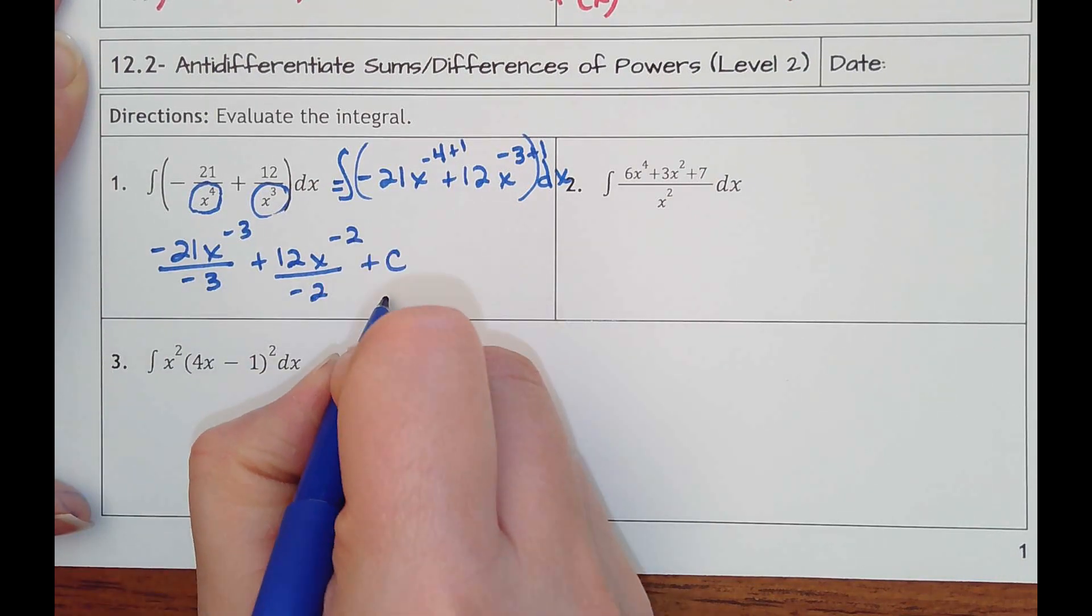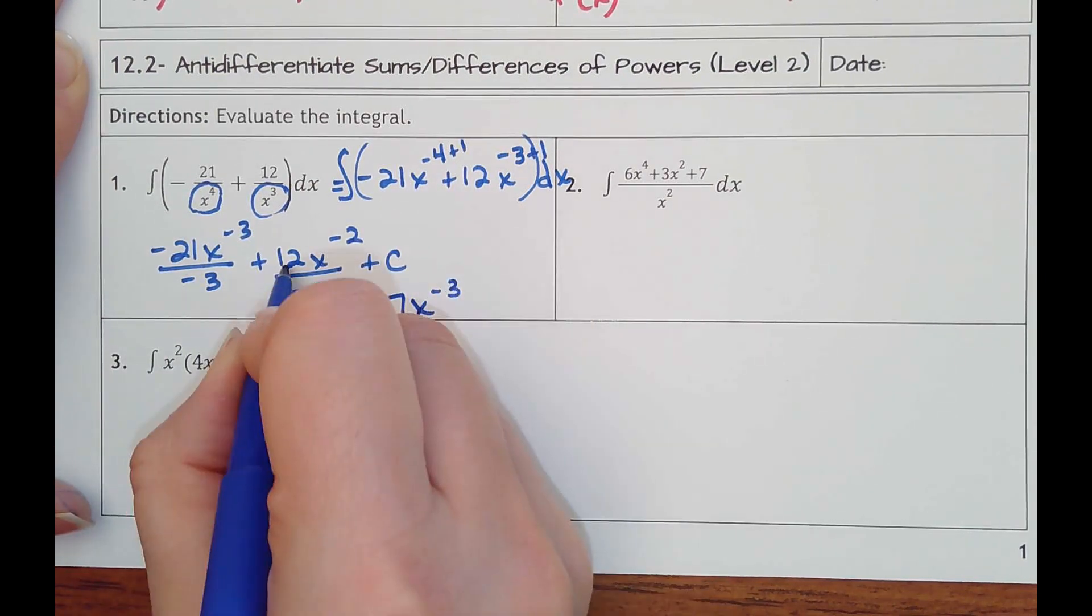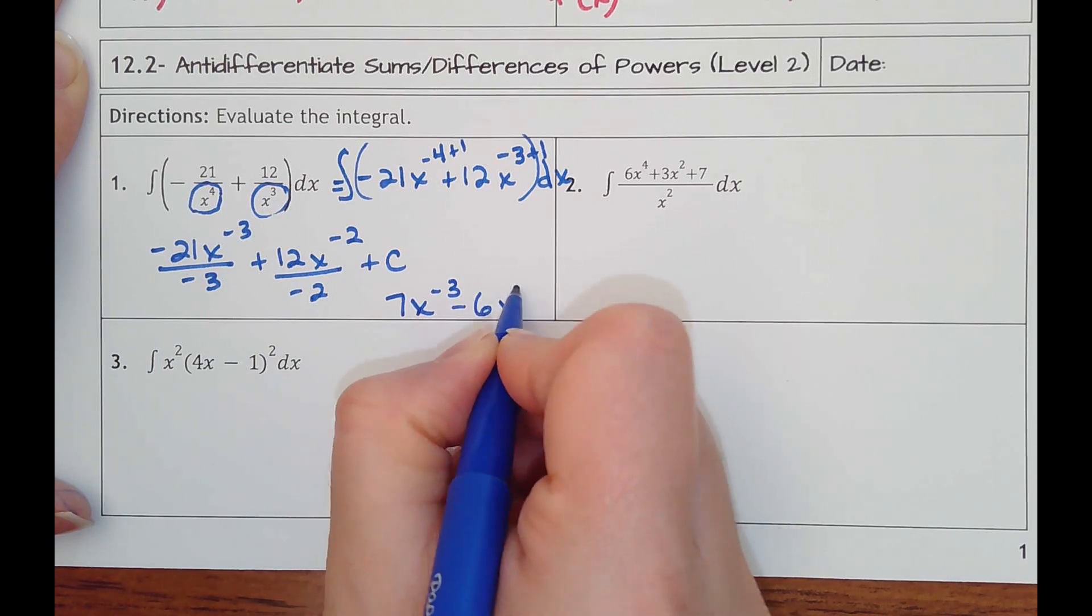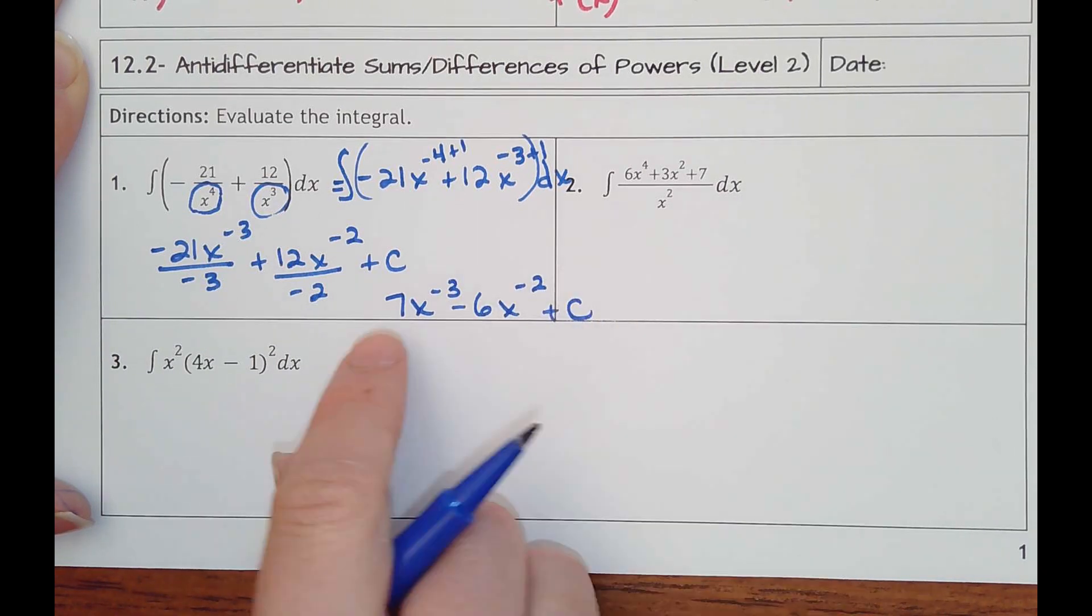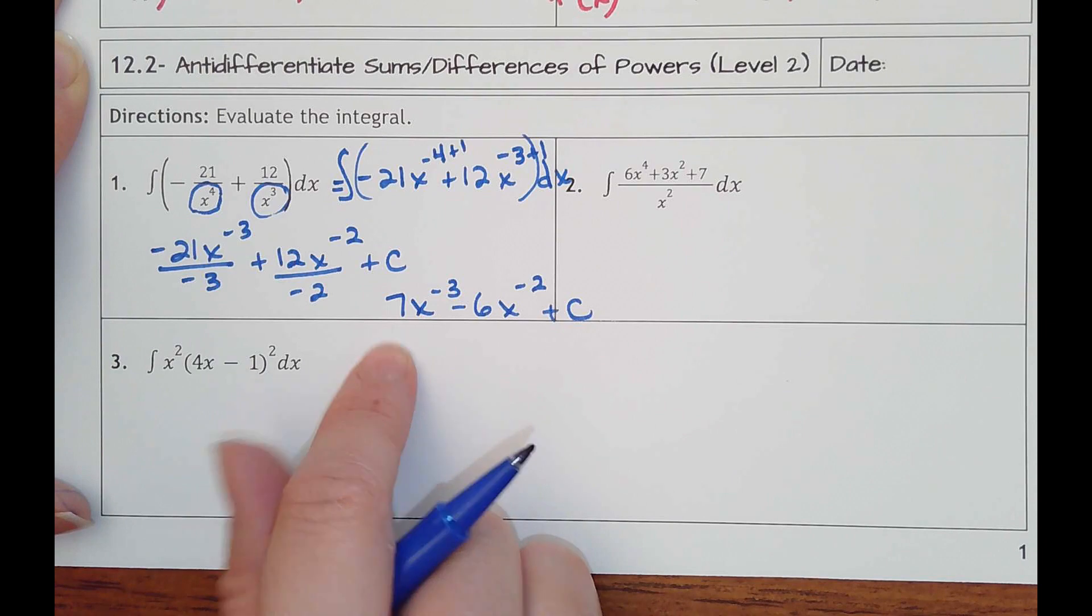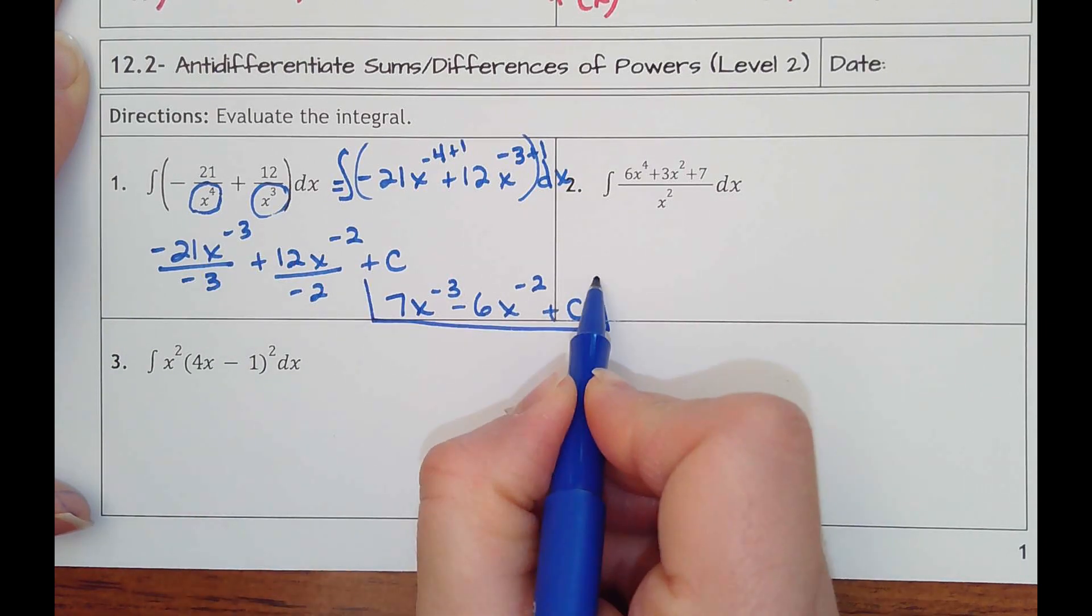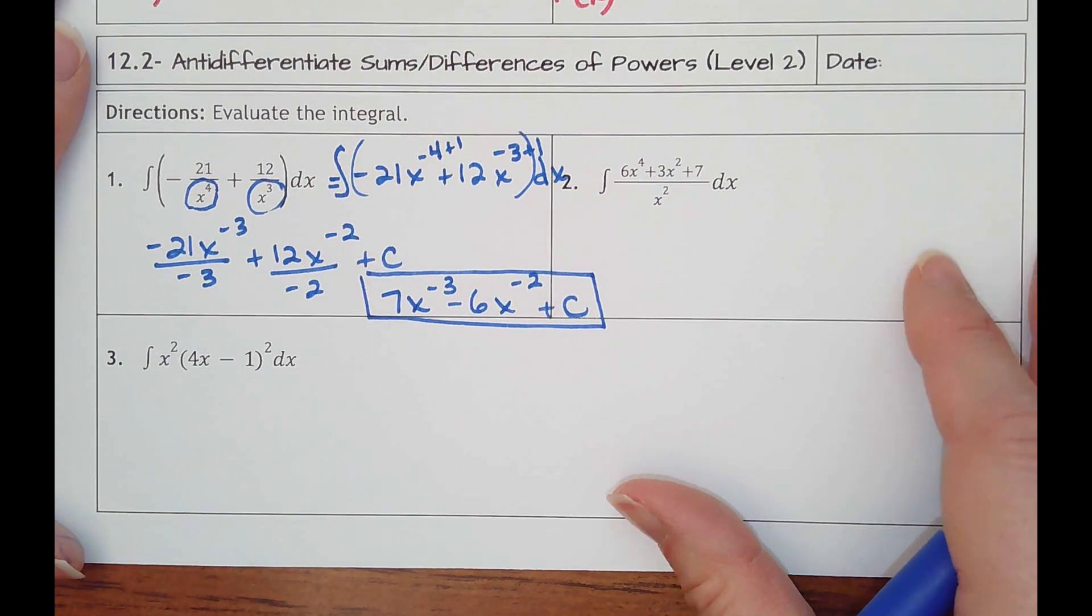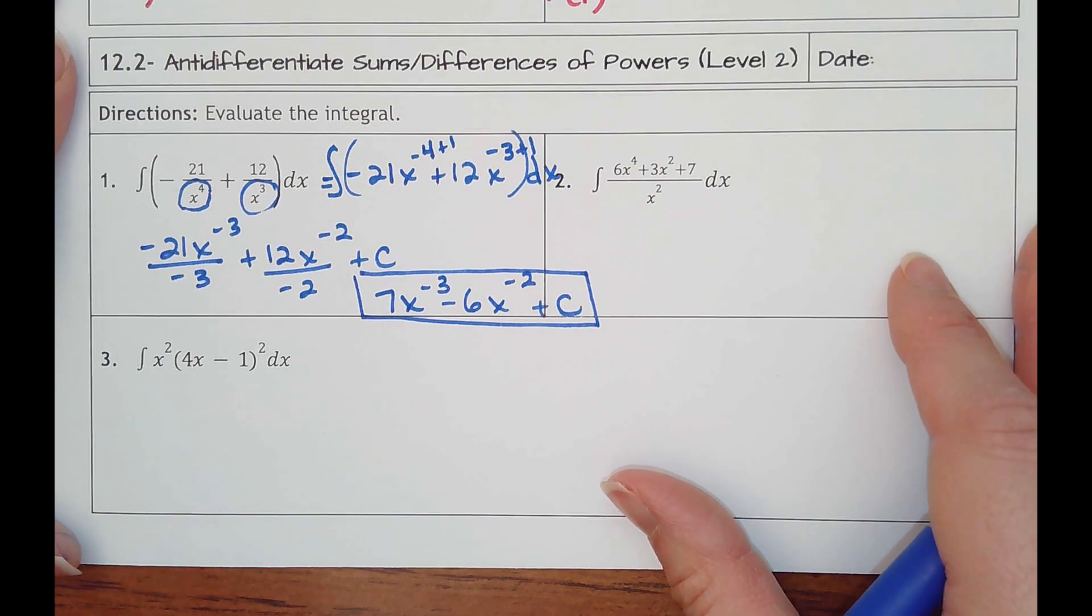Simplify that. That would be positive 7x to the negative 3rd, minus 6x to the negative 2nd, plus c. And again, you could always check to see, is it going to work? And I would leave it like that. But I don't see a need to put the x to the negative powers back in the denominators.